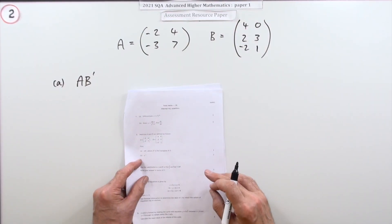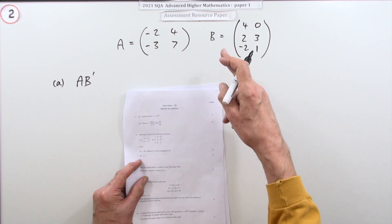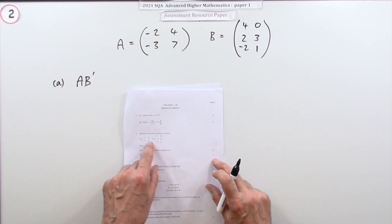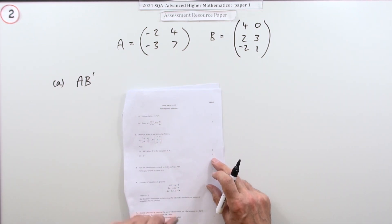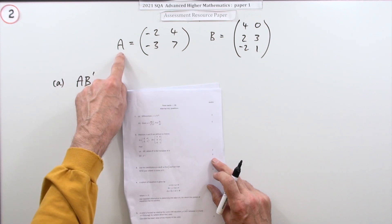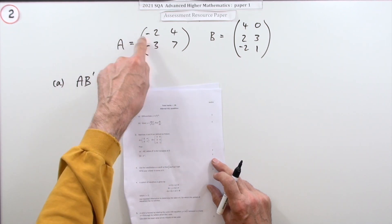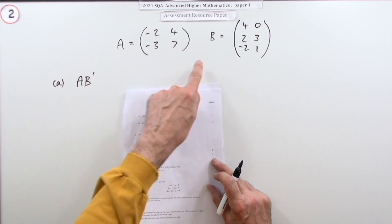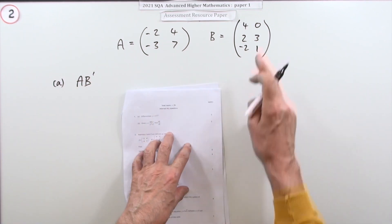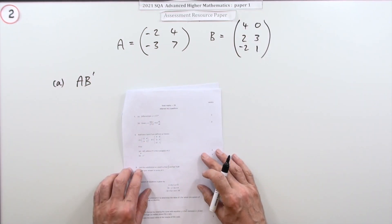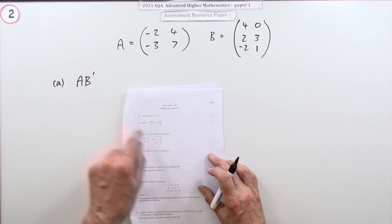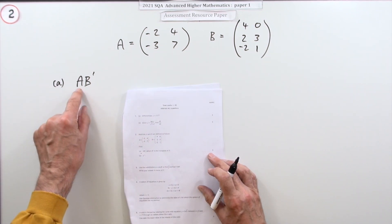Number two from paper one of the 2021 Advanced Higher Maths resource paper. The question involves matrix operations. It gives you a 2x2 matrix A and a 3x2 matrix B. The first part, for two marks, is to find the product AB^T.